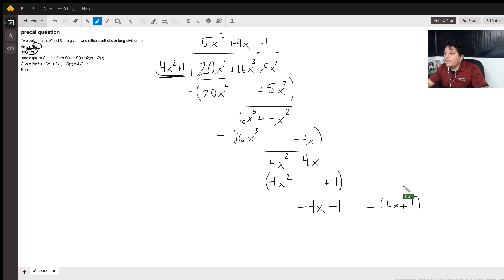So when I divide this big polynomial by 4x squared plus 1, I end up with 5x squared plus 4x plus 1 minus 4x plus 1.